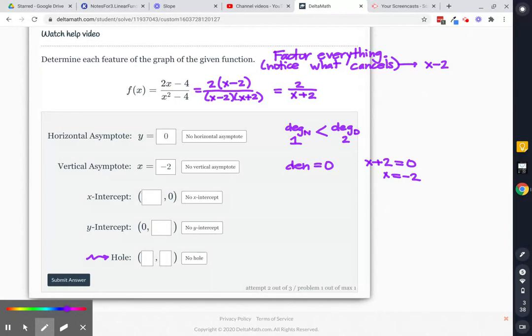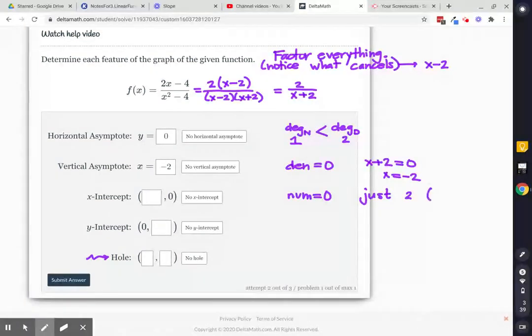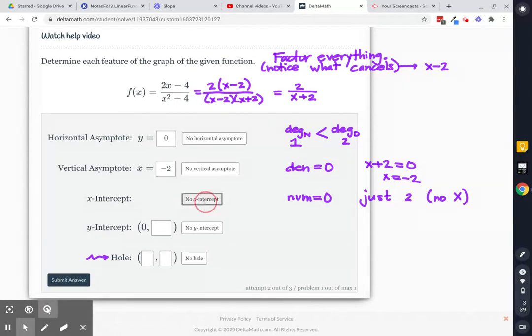My x-intercept. Okay. Denominator equals 0 is done. X-intercept is where the numerator equals 0. Well, my numerator is just 2. There's no x in the numerator after canceling, which means there's no x-intercept in this particular problem.